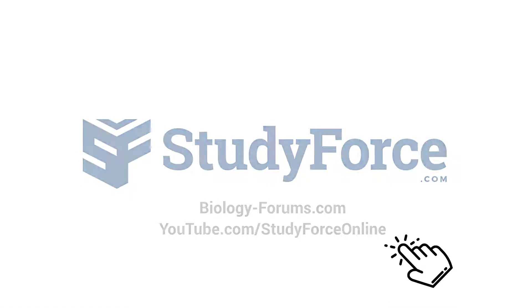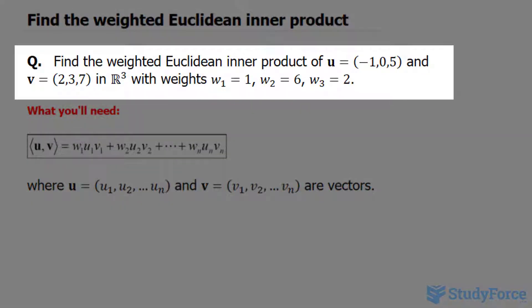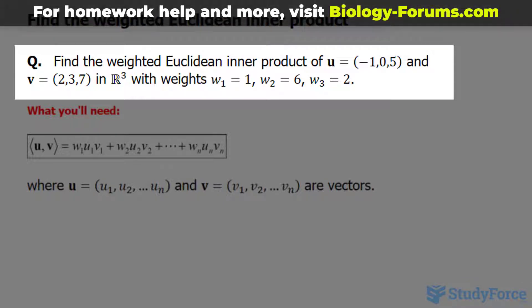In this lesson, I'll show you how to find the weighted Euclidean inner product. The question reads, find the weighted Euclidean inner product of the vector negative 1, 0, and 5. Those are its x, y, and z components.